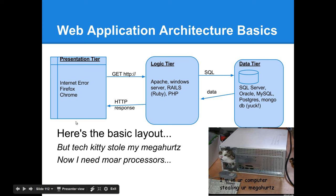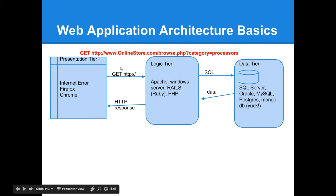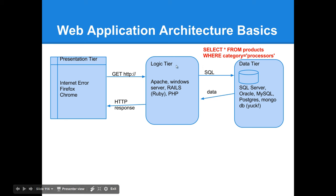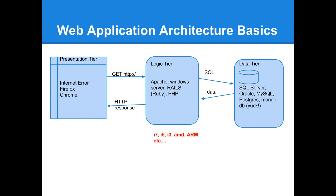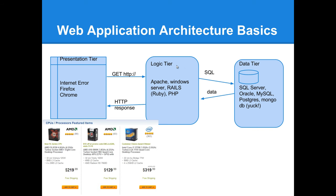A quick demo of this architecture: say I have a problem with my computer and need to replace parts. I go to an online store and browse for processors. On the logic tier, my GET request translates to a query selecting all records from the product table where the category is 'processor,' returning results for i7, i5, AMD, etc. The presentation tier on the client side renders those results.